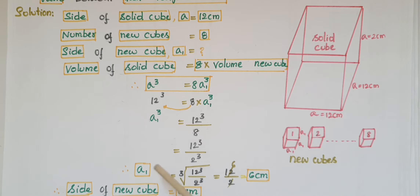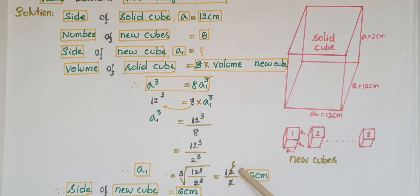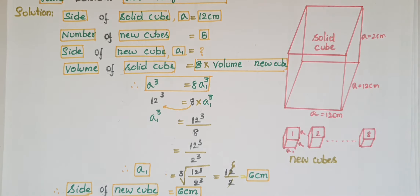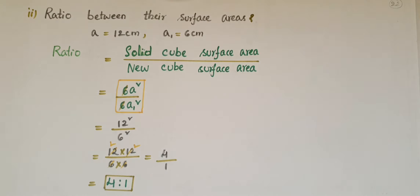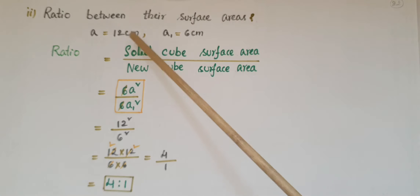12³ divided by 8 — we can write 8 as 2³, so a1 = cube root of (12³ / 2³), which equals 12 / 2 = 6 centimeters. So the side of the new cube is equal to 6 centimeters.